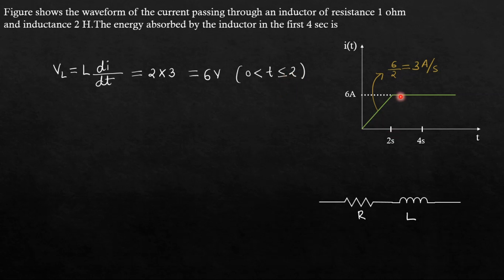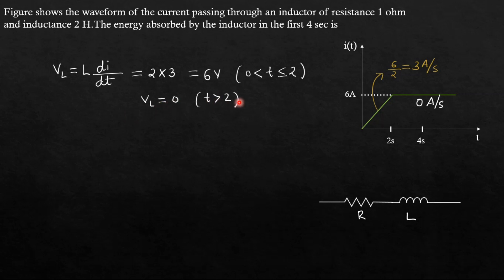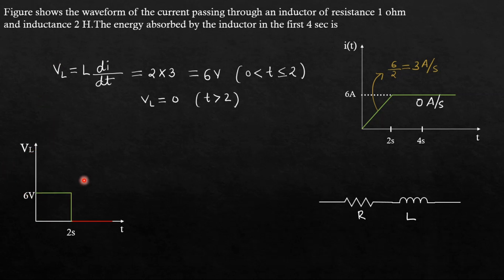After 2 seconds, the current waveform is flat, meaning di/dt is 0 — slope is 0 amperes per second — so the voltage across the inductor is also 0 for t greater than 2 seconds. The voltage waveform therefore looks like: 6 volts from 0 to 2 seconds, and 0 volts after 2 seconds.